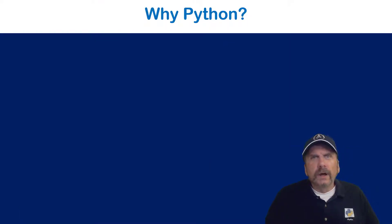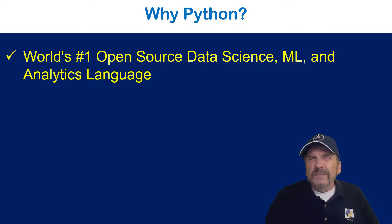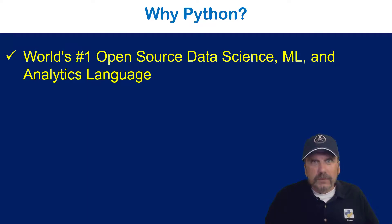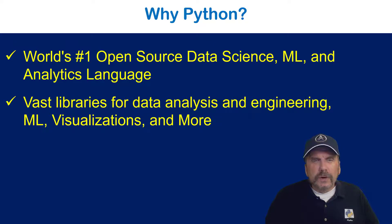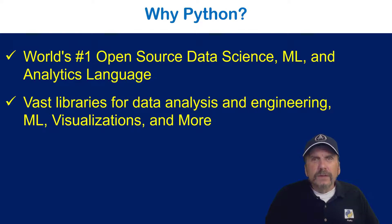So why Python? Python is the number one open source data science, ML, and analytics language. It's really taken the data science and analytics world by storm. And aside from SQL, which is ubiquitous across any data analysis, Python is really becoming the cornerstone of almost everything going on in data analytics engineering and data science. The reason it's gained so much ground is that there are vast libraries out there available free and open source — doing data analysis, data engineering, machine learning, training, visualizations, and on and on. You can even write full-blown websites with frameworks like Django.